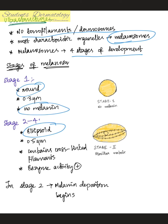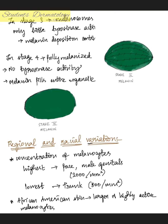In stage one there is no melanin, whereas from stage two to four there is tyrosinase enzyme activity. In stage two, melanin deposition begins with normal tyrosinase activity. In stage three, there is only little tyrosinase activity but melanin deposition continues. In stage four, the organelle is fully melanized and there is no tyrosinase activity — melanin fills the entire organelle.